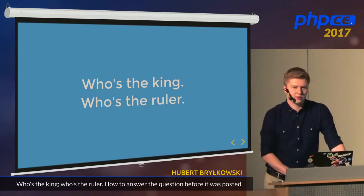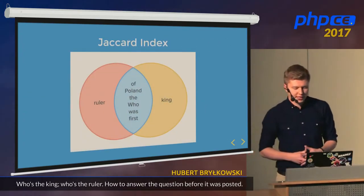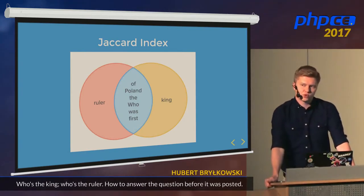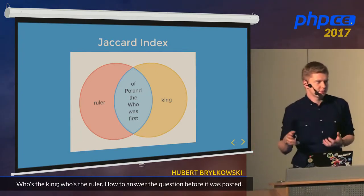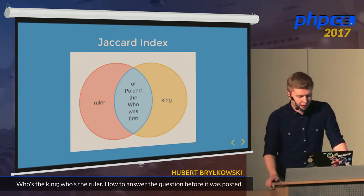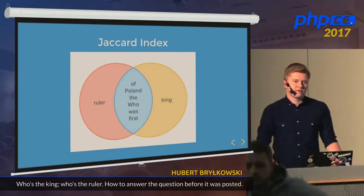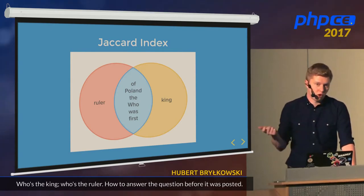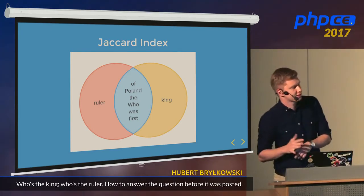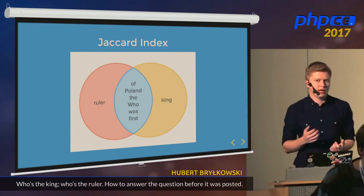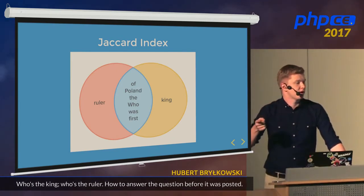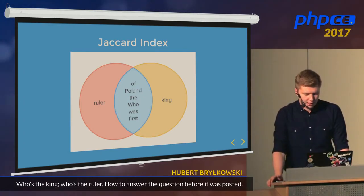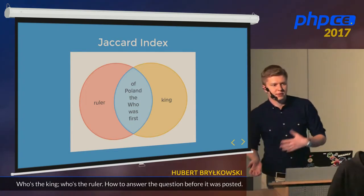There are a lot of string metrics that tell us how different two strings are, but I'll focus on the Jaccard index. It's not exactly a string metric — more the metric of similarity between two sets. We have two questions: 'Who was the first king of Poland?' and 'Who was the first ruler of Poland?' We put them into two sets — sets are unordered, so word order doesn't matter. The Jaccard index is the intersection divided by the union of the two sets. We count common words: six. And the total unique elements: eight. So the Jaccard index is 6/8 = 0.75. The bigger the Jaccard index, the more similar the sets.